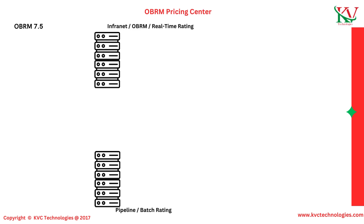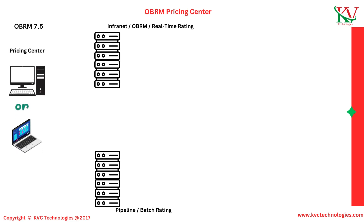Let's assume we have two servers: one server for Real-Time Rating and a second server for Pipeline Rating, that is Batch Rating. Both will connect to the same database, OBRM DB, but with different schemas. When we want to create price plans, we use the Pricing Center tool, which is a standalone application developed using Java Swings concepts.